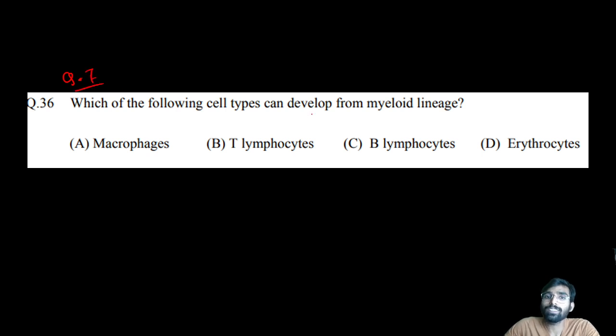Question number seven: Which of the following cell types can develop from myeloid lineage? In cell development there is one myeloid progenitor and one lymphoid progenitor during RBC and WBC development. Which cell types develop from myeloid lineage - macrophage, RBC, B cell, or T lymphocyte? The correct option is macrophage and erythrocyte. These are myeloid origin, and B lymphocyte and T lymphocyte are lymphoid origin.